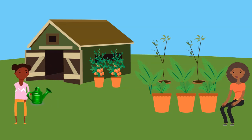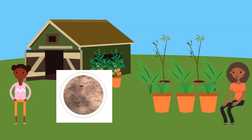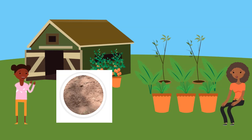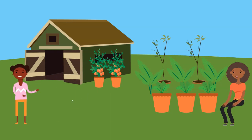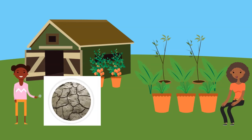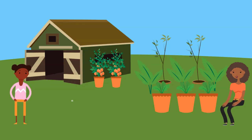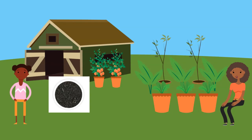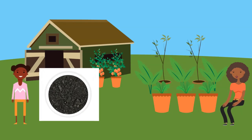Soil called silt is better for growing plants. It has smaller particles than sand. It is found near lakes and rivers. Clay soils have particles that are packed tightly together. Clay can hold a lot of water, but does not have space for the roots of the plants.